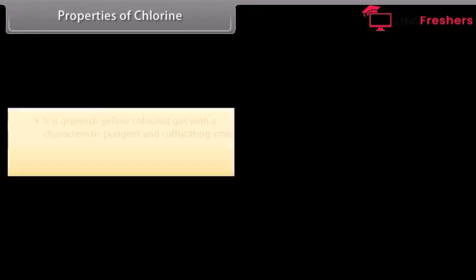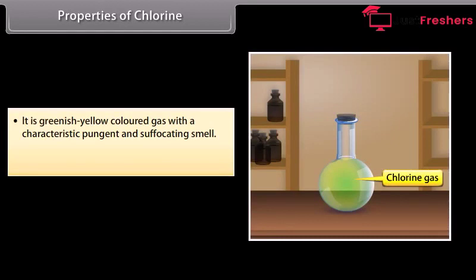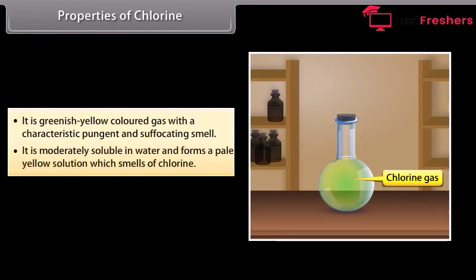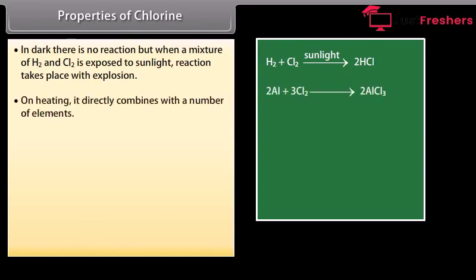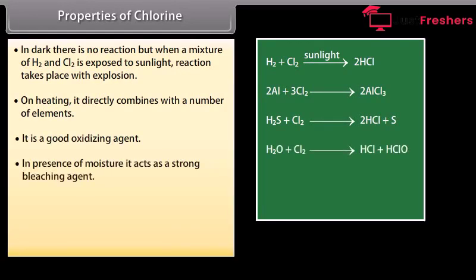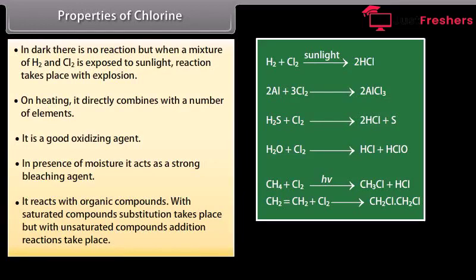Chlorine is a greenish-yellow colored gas with a characteristic pungent and suffocating smell. It is moderately soluble in water, forming a pale yellow solution called chlorine water. In dark, there is no reaction, but when a mixture of H2 and Cl2 is exposed to sunlight, reaction takes place with explosion. On heating, it directly combines with a number of elements. It is a good oxidizing agent. In presence of moisture, it acts as a strong bleaching agent. With saturated compounds, substitution takes place, but with unsaturated compounds, addition reactions take place.